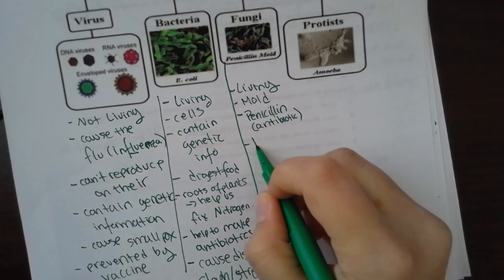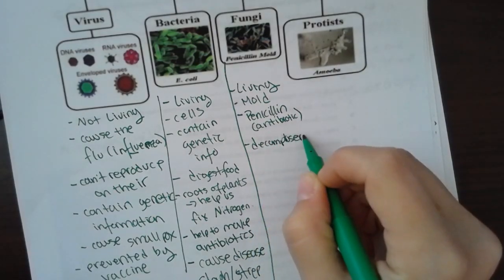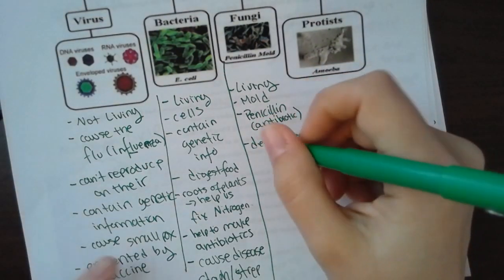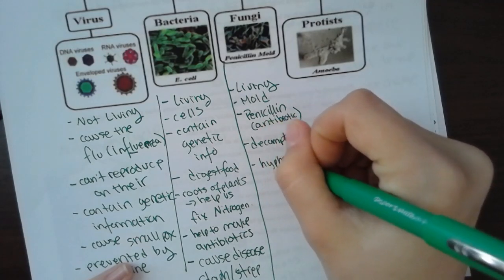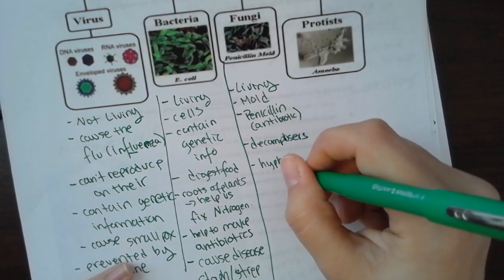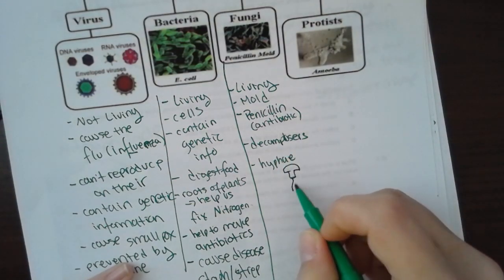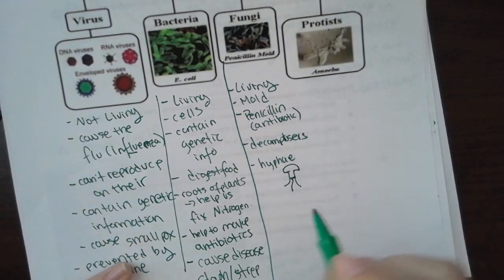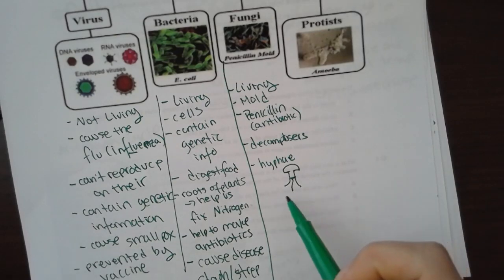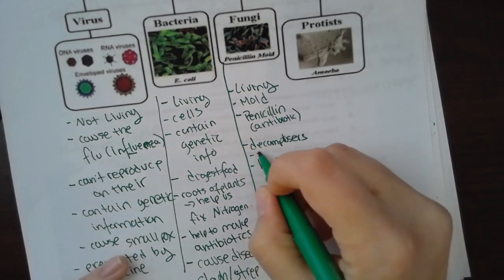Fungi are decomposers — they're going to eat anything that's dead. Normally what happens is they use hyphae to dig into the ground. A mushroom is a fungus. They use hyphae to dig into the soil and basically eat anything that's dead or decaying in the soil.